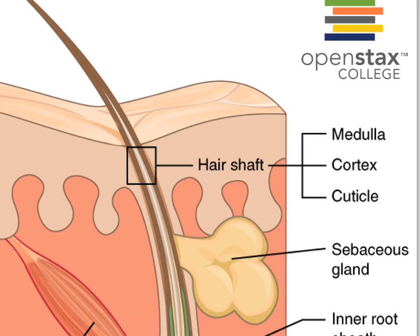We'll see that term over and over again, along with cortex. The cortex will usually surround the medulla. In our hair shaft case, that is the dark brown layer. Superficial to the cortex, we have the cuticle. These are all keratinocytes that get damaged as our hair grows longer, and so we like to cut our hair to remove those hair follicles with damaged cuticles.